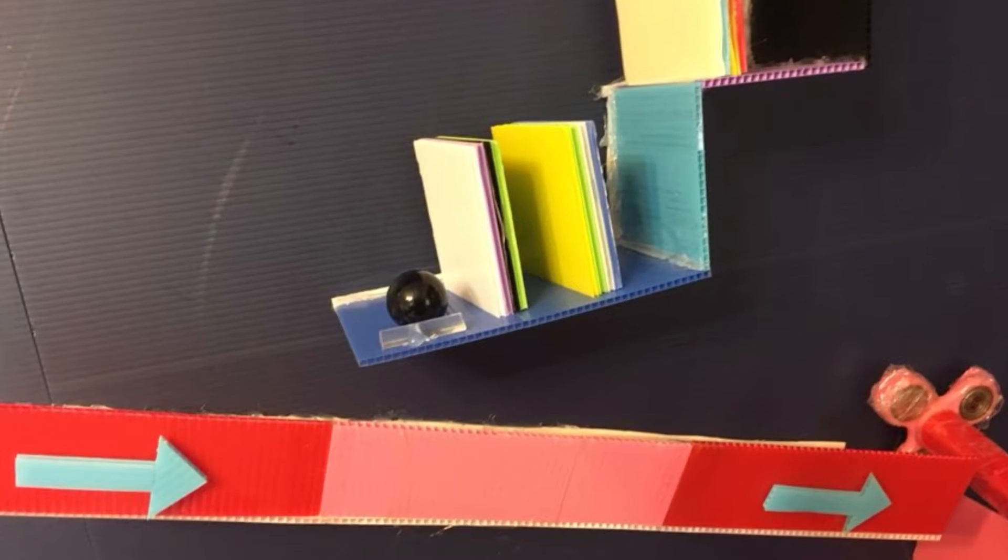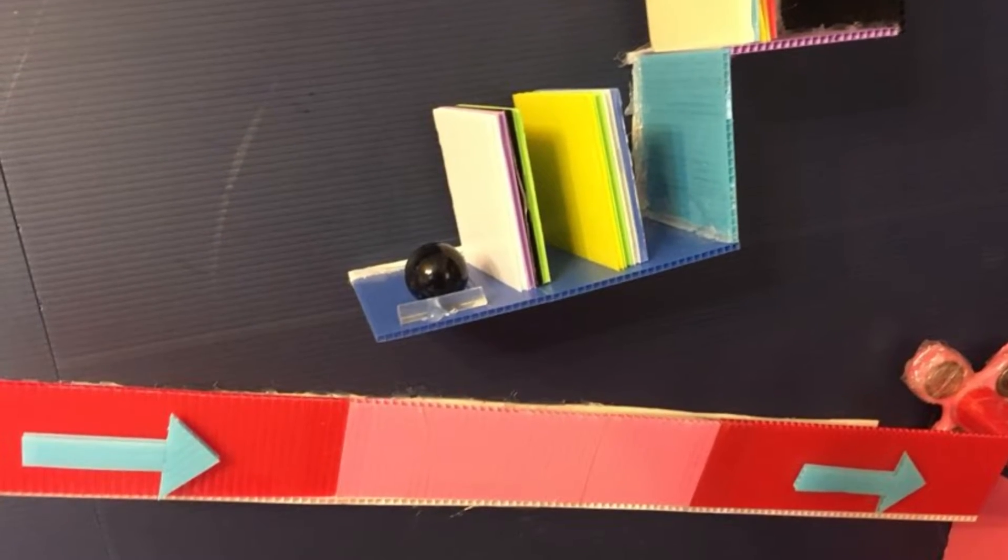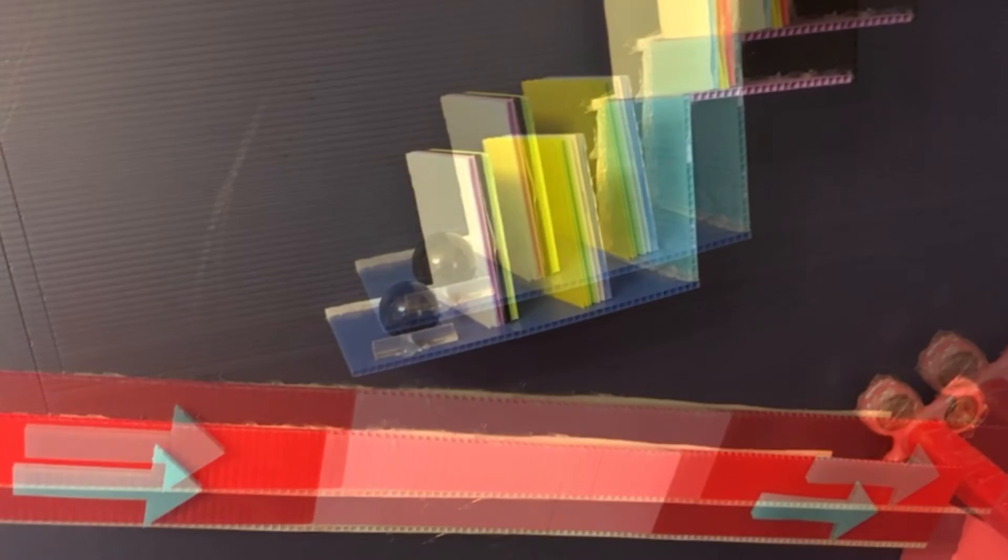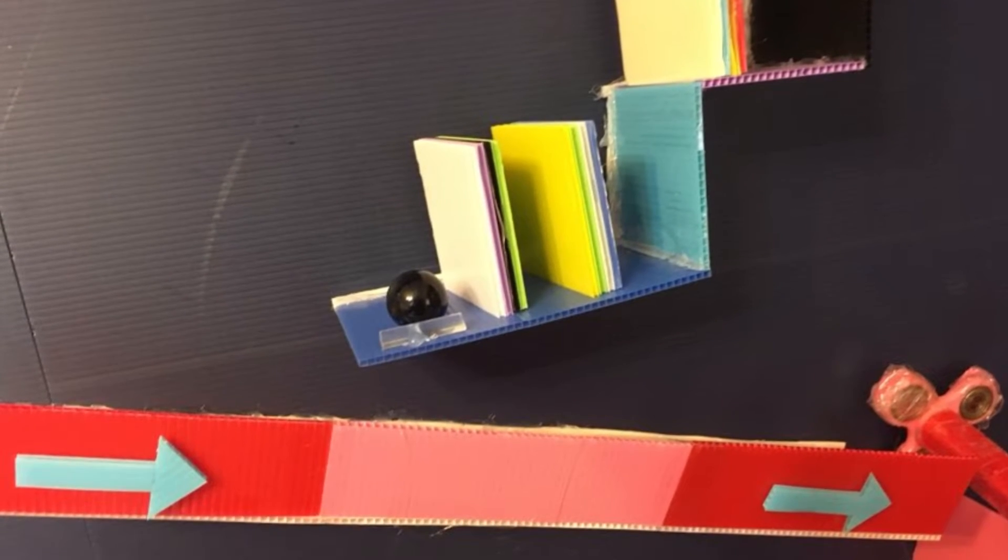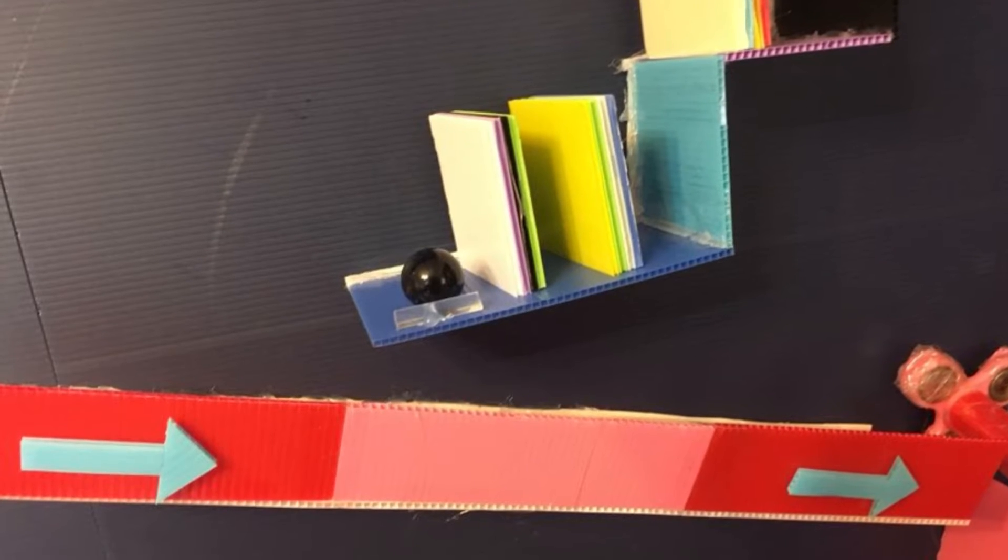So this is the second marble rolling down the ramp. I didn't want the marble to roll down too fast so that it misses the fidget spinner, and I also didn't want it too slow so that it doesn't have enough force to hit down the domino. So to fix this problem, I used a plastic board that has bumps as my material to increase the friction.